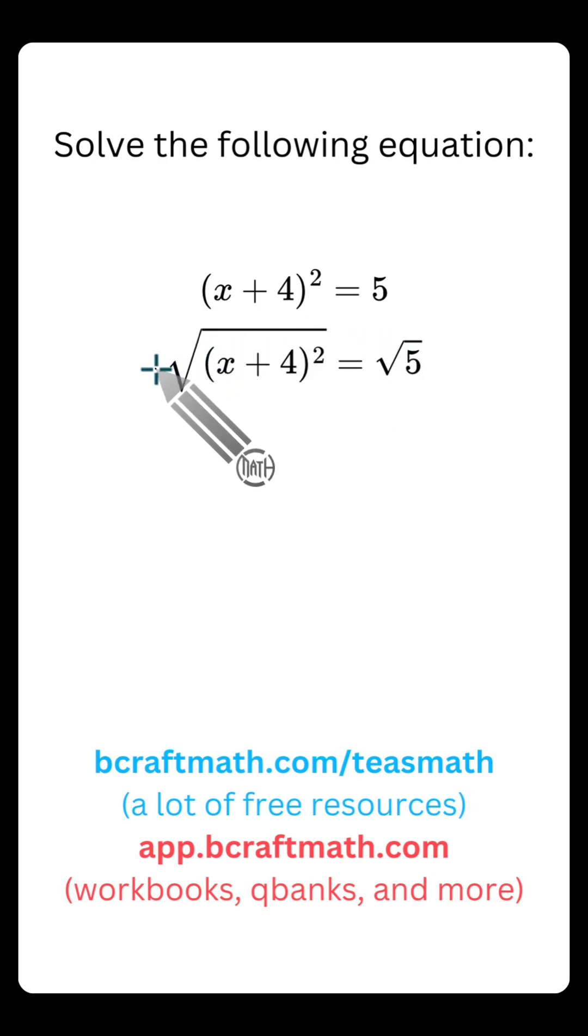The point of us doing this is that the square root cancels out the square, just like yesterday. But this is where things start to get a little bit different. Yesterday's example right here, we had a 25. And when we took the square root of 25, we got plus or minus five.